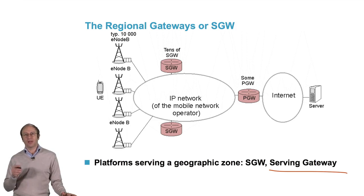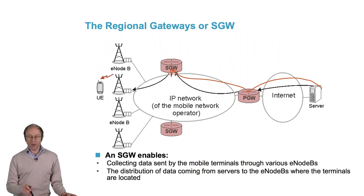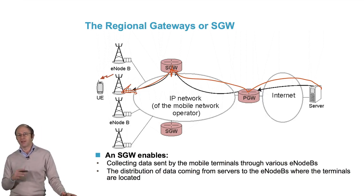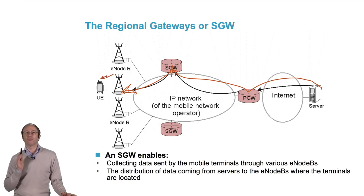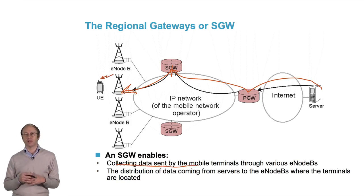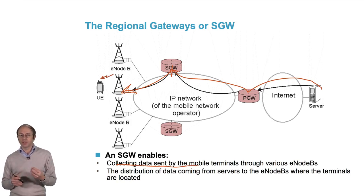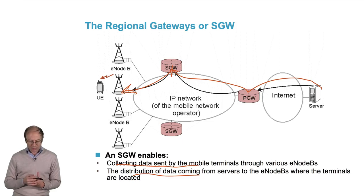Now we have an additional hop: Server to P-Gateway, P-Gateway to S-Gateway, S-Gateway to eNB. That seems slightly more complex, but the advantage is that when the terminal moves, very often it remains under the same S-Gateway, and it's only the S-Gateway that has to manage this mobility and rerouting. So an S-Gateway enables not only the collection of data sent by the mobile terminals to various eNBs, but also the distribution of data coming from servers to the eNB where the terminal is.